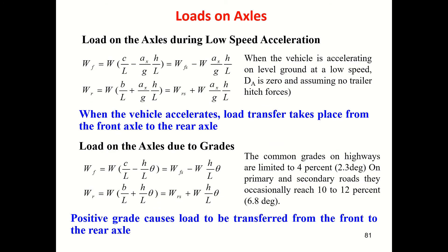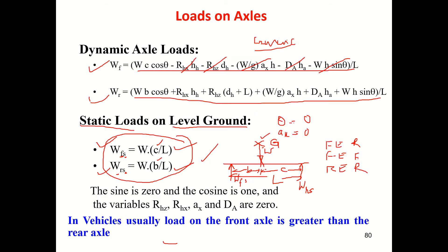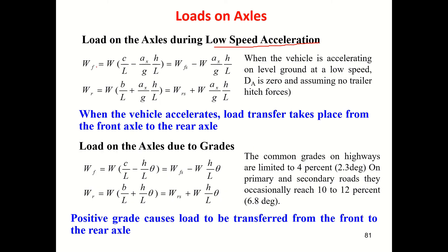Next condition: load on the axle during low speed acceleration. At low speed the drag force can be ignored. Again, if level ground, θ = 0. If there is no hitch, those terms are removed. Then you get: Wf = W(c/L) − (ax/g)(h/L).